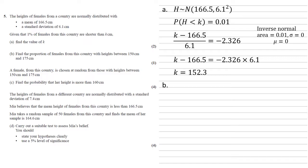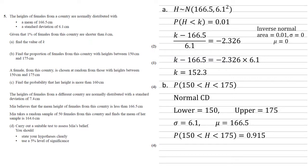Part B, we need to find the proportion of females from this country with heights between 150 centimeters and 175 centimeters. So we're looking for the probability H is between 150 and 175. We're going to use our normal cumulative distribution with a lower of 150, upper bound of 175, standard deviation of 6.1 and a mean of 166.5. Put them into the calculator, we will get an answer of 0.915.